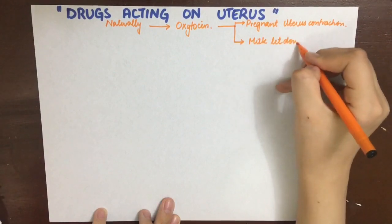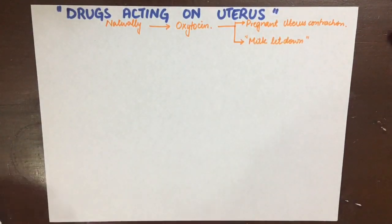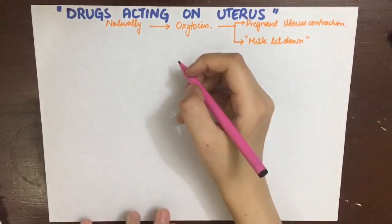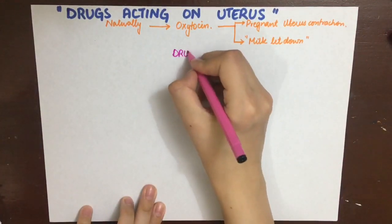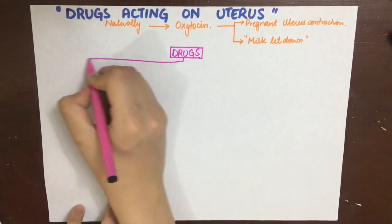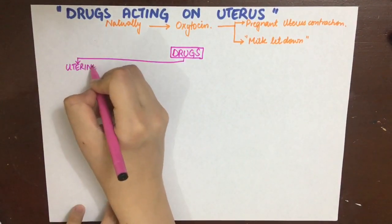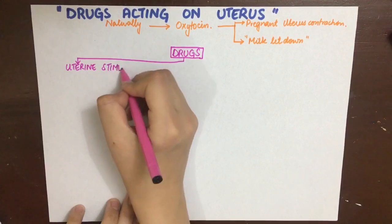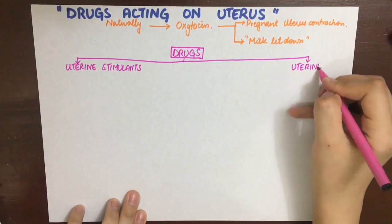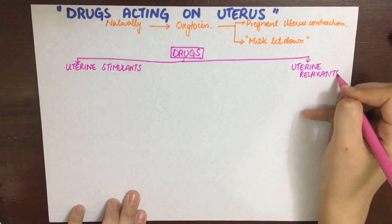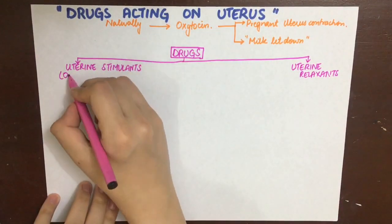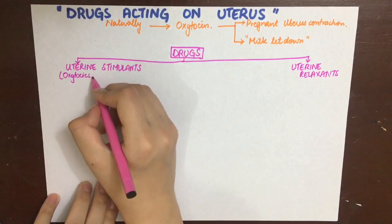Oxytocin does two main things: contraction of the pregnant uterus, and myoepithelial cell contraction resulting in the milk let-down reflex. Among drugs acting on the uterus, we have drugs which stimulate the uterus and drugs which relax the uterus. Uterine stimulants are also known as oxytocics or ecbolics, while uterine relaxants are known as tocolytics.